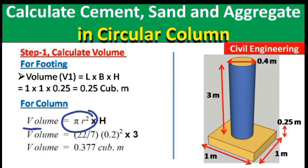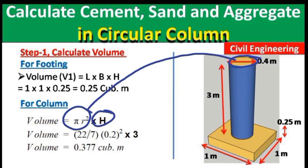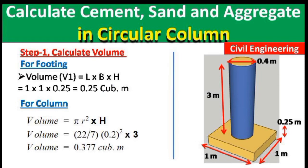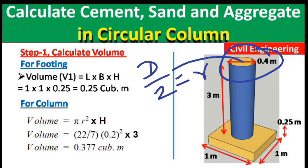For the circular column, the volume formula is V = π r² × h. We calculate the area of the circular cross-section first, then multiply by the height. Since the diameter is given as 0.4 m, we divide by 2 to get the radius r = 0.2 m.